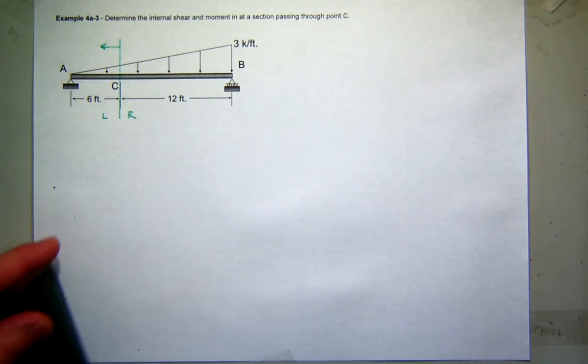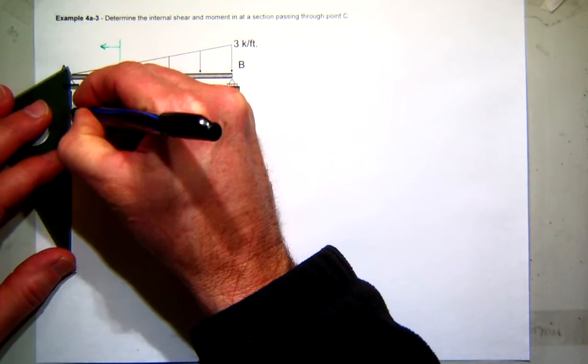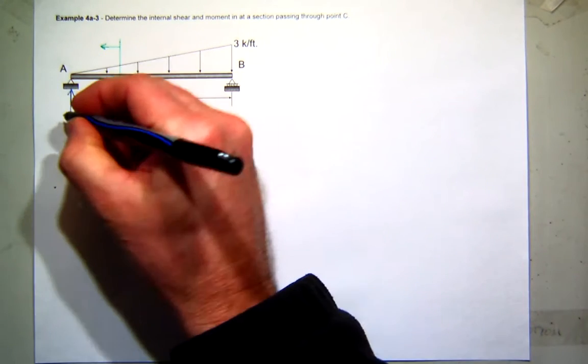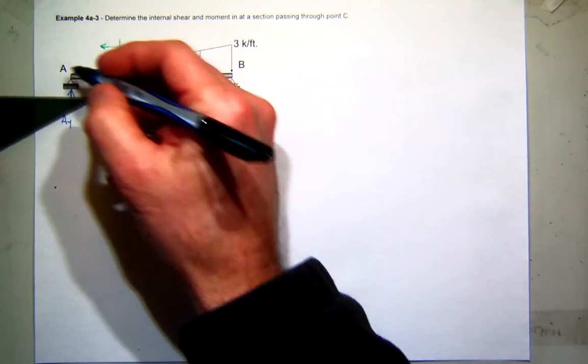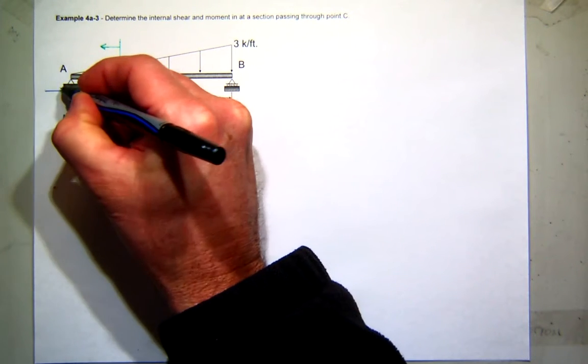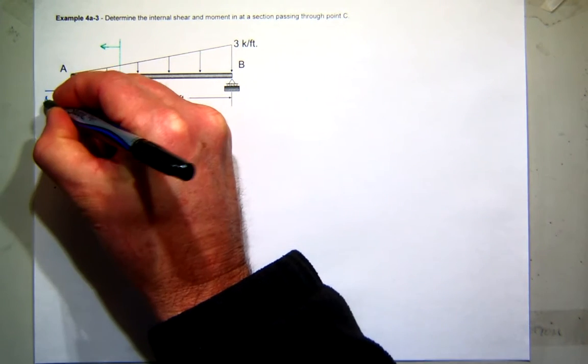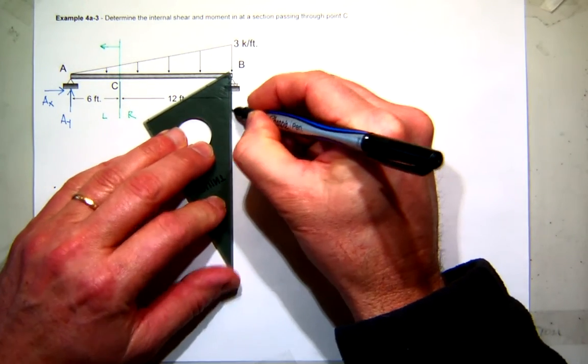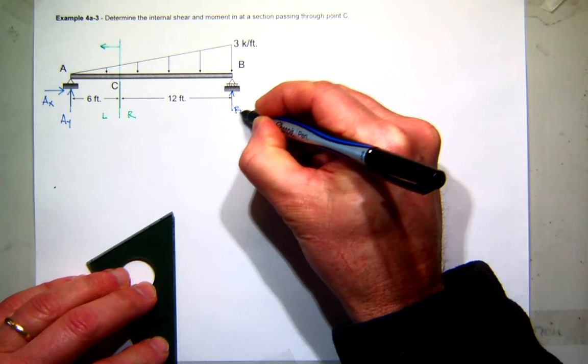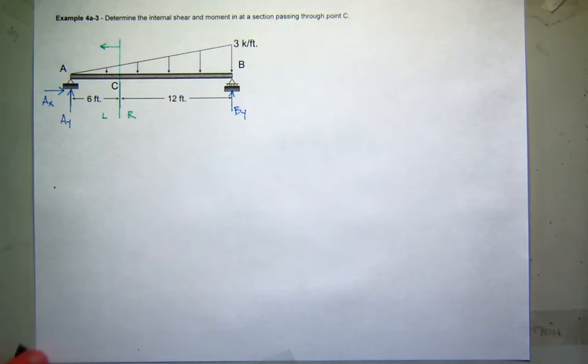So if I'm going left, then really what I'm interested in are my reactions at A. So I'll go ahead and make assumptions for those. I'll assume AY is up and that I have a reaction in the X direction, AX to the right. And I'll assume BY is up, even though I'm not really concerned about that right now.